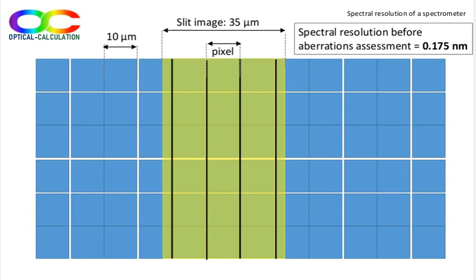The pixels are 10 micron wide and are therefore 3.5 times smaller than the width of the slit in the image plane. So, they are not limiting the spectral resolution.